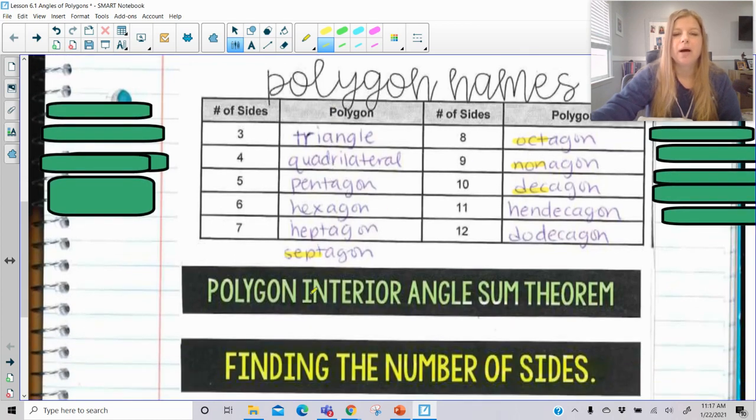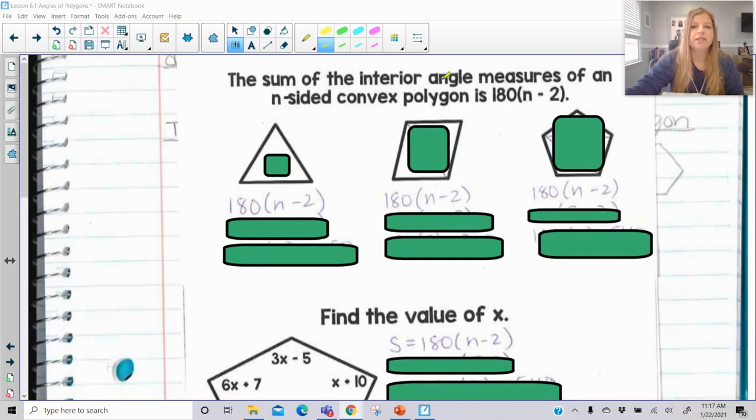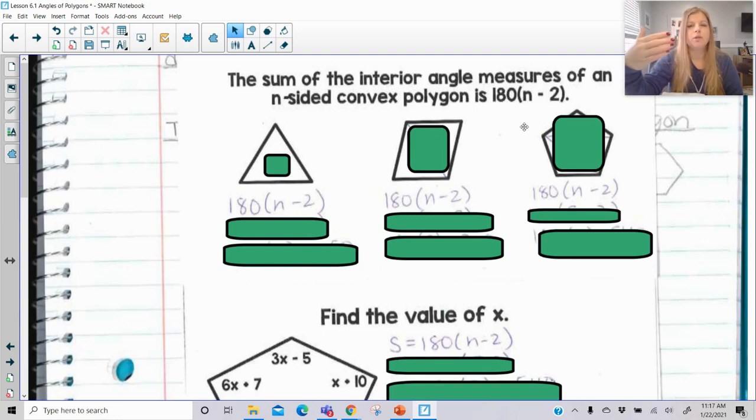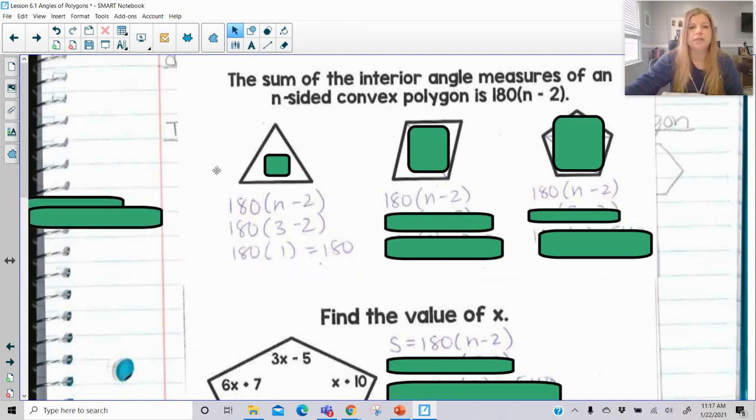So now what I want to show you is the polygon interior angle sum theorem. The polygon interior angle sum theorem is that the sum of the interior angle measures of an n-sided convex polygon is 180 times n minus 2. Now here is what this is saying. It's saying if I want to figure out the sum of all of the interior angles of any polygon, no matter how many sides it has, I'm going to follow this formula. I'm going to do 180 times the number of sides it has subtracted by two. So if I gave you a triangle and I substitute in the fact that it's got three sides, well three minus two is one and 180 times one is just 180. But we knew that. We knew there's 180 degrees in a triangle.